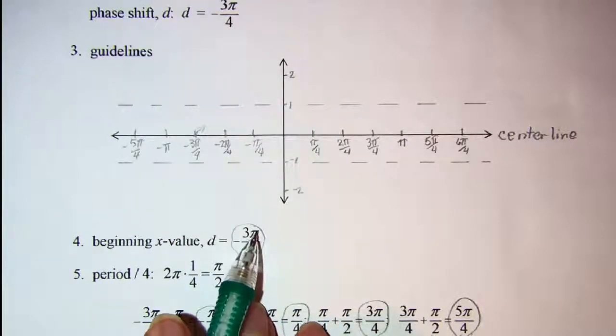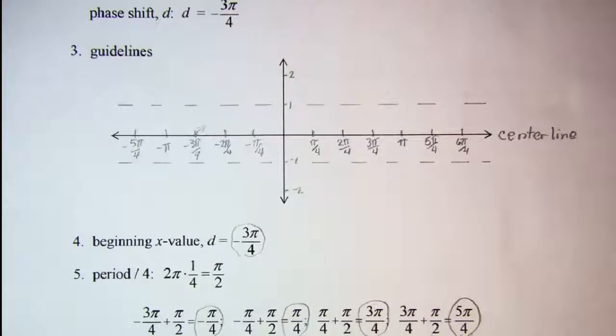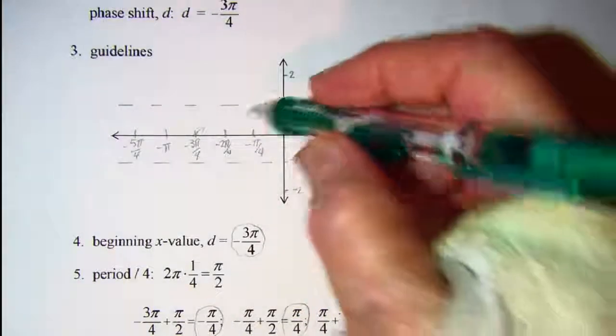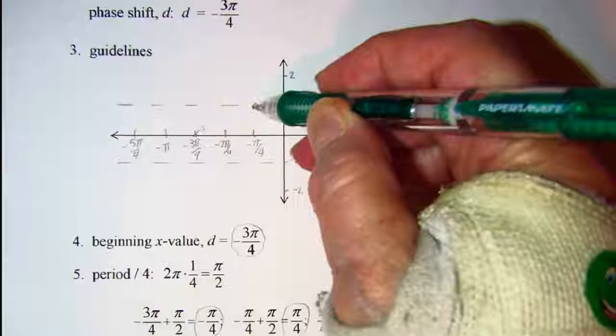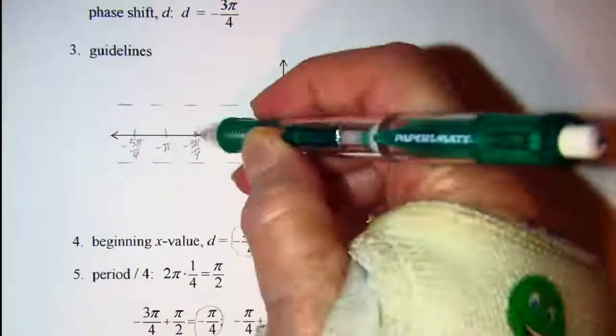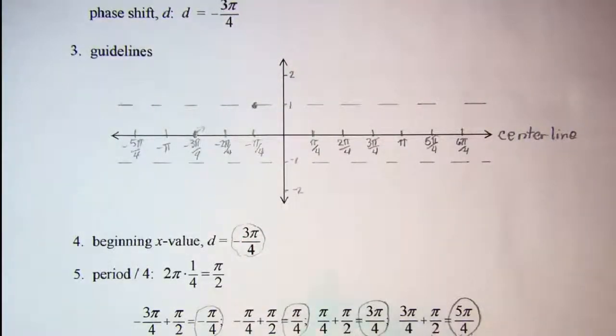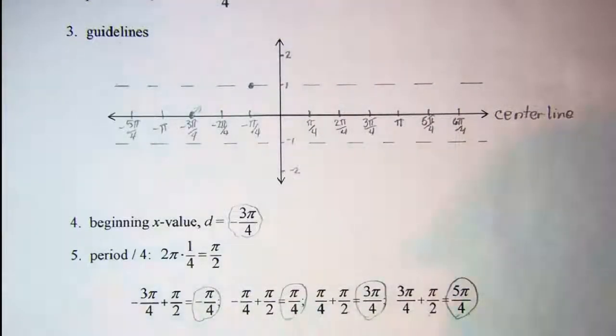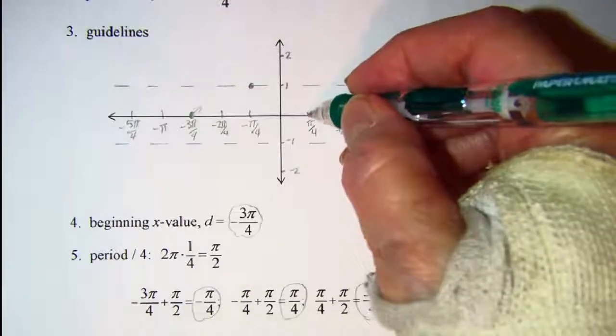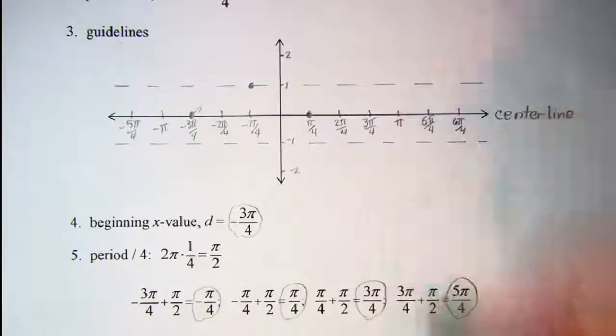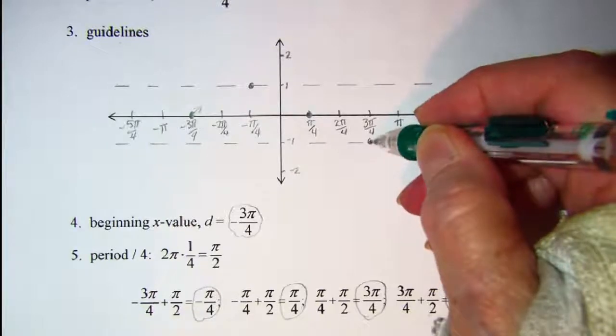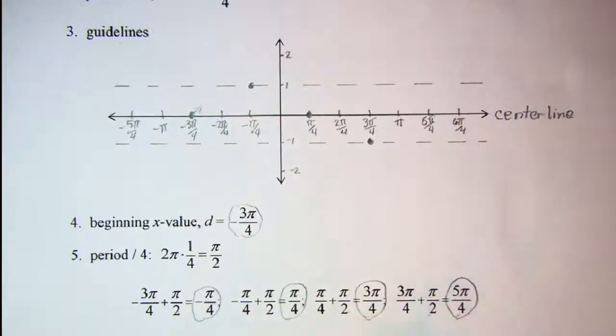My first maximum value, we hit it at negative pi over 4, which is right here. And then I come back and hit the center line at positive pi over 4, and then I'm going to hit the minimum value at 3 pi over 4. And the center line at 5 pi over 4.